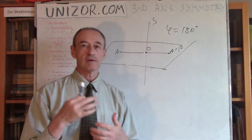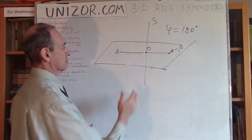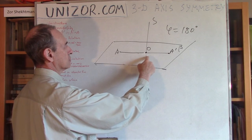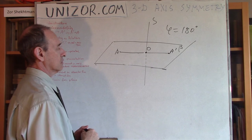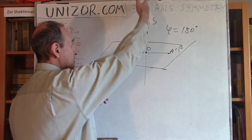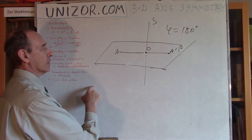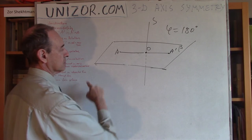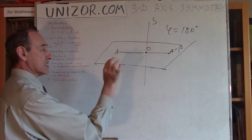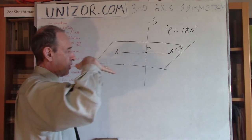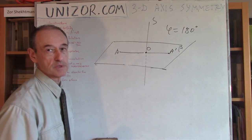If φ equals 180 degrees, the point goes to the other side at the same length. Rotating the segment by 180° places it in exactly the position prescribed by the symmetry relationship relative to the axis. So this rotation is just another view of symmetry around the axis: instead of dropping a perpendicular and continuing the same distance, you take the perpendicular plane and rotate within it by 180 degrees.